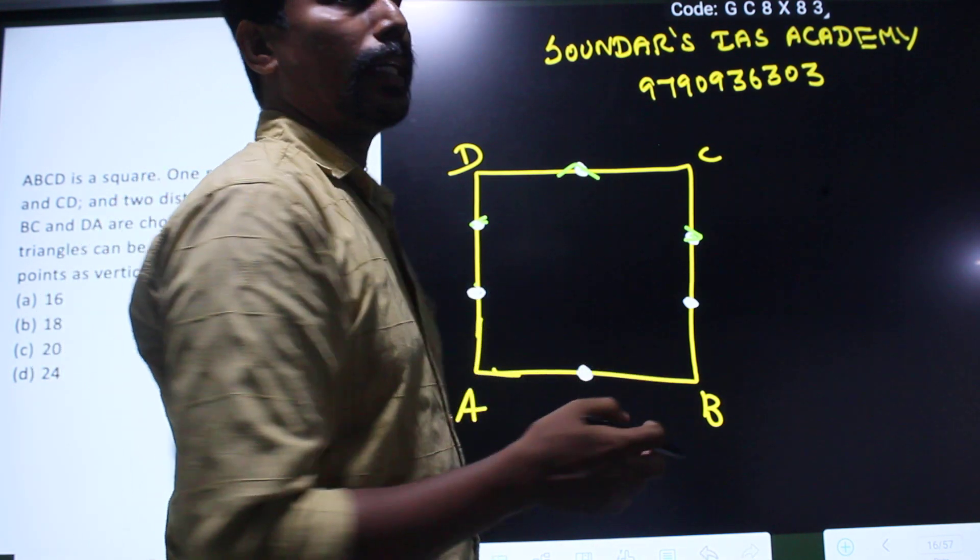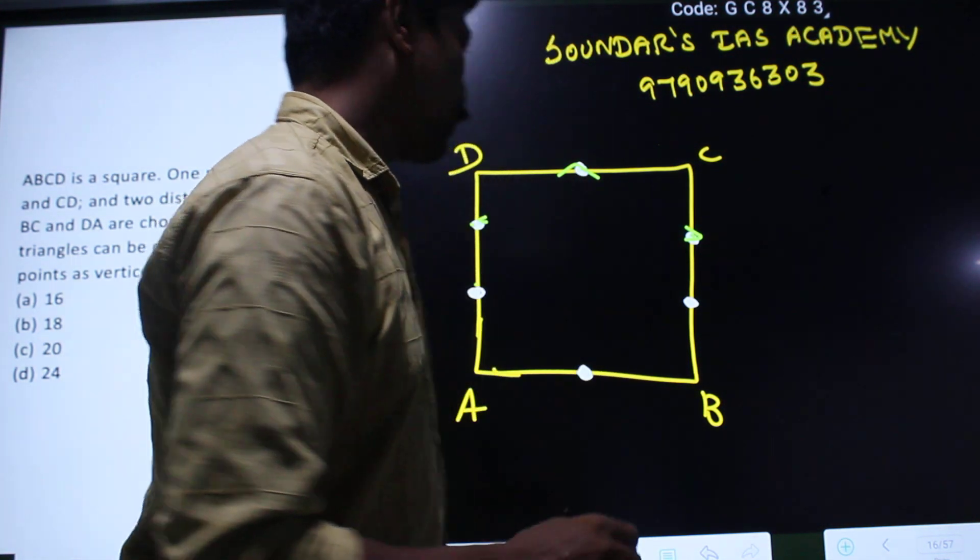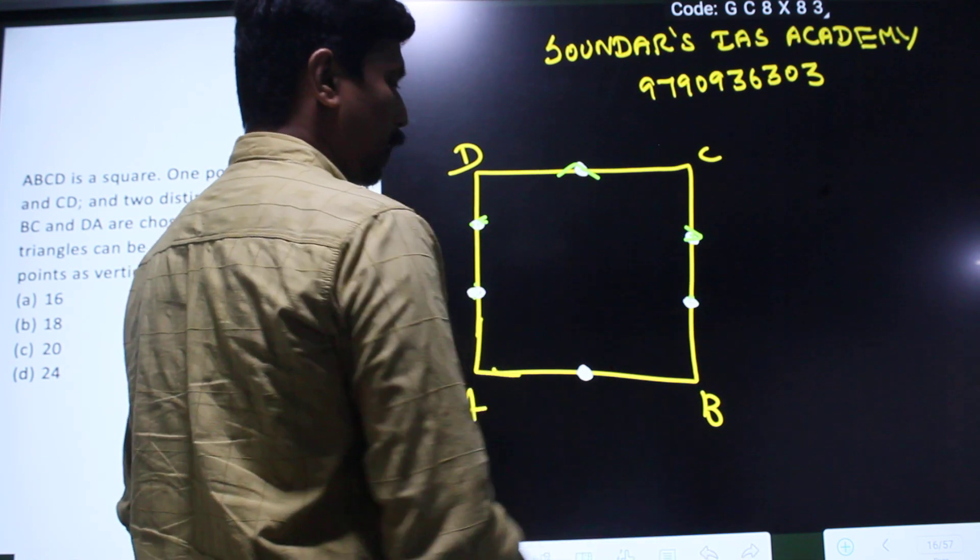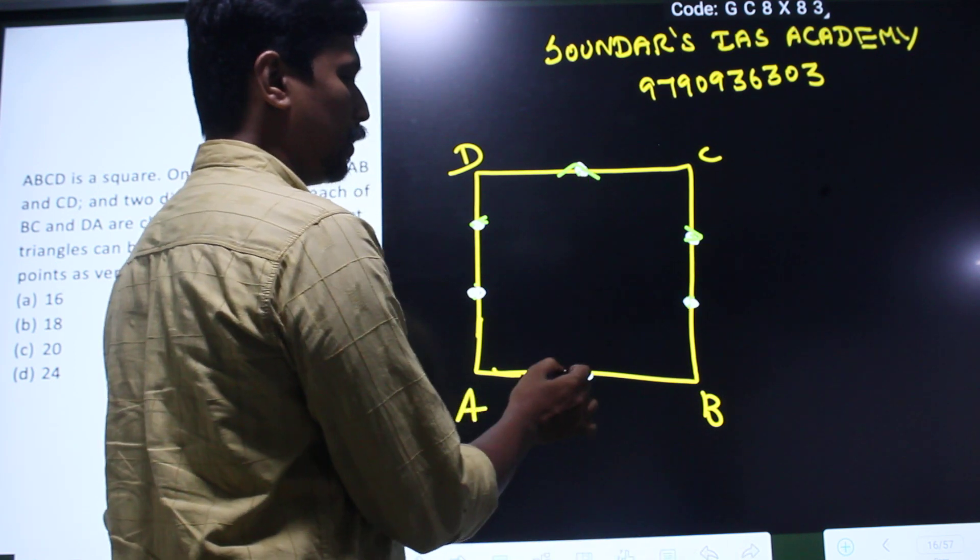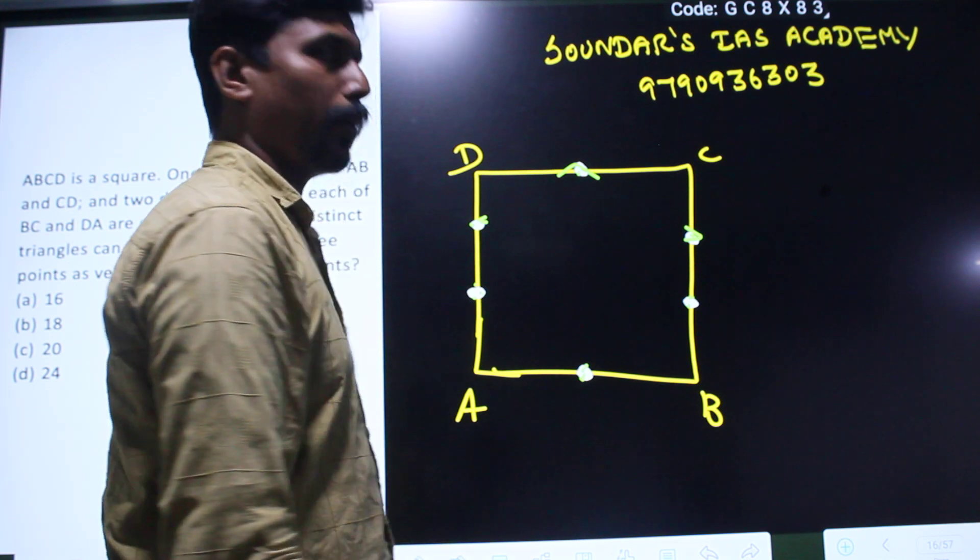In the 6 points, what 3 points are selected? Suppose I select 3 points, this is a triangle. I select 3 points, this is a triangle. I select 3 points, this is a triangle. So selection of any 3 points is a triangle.